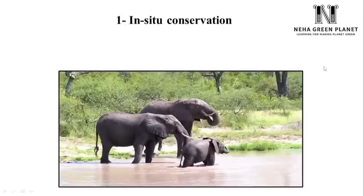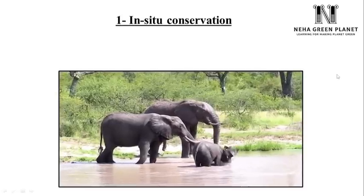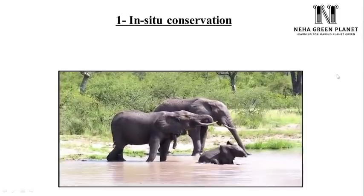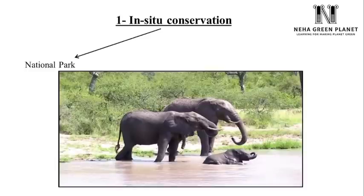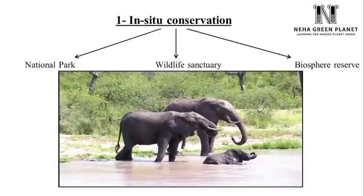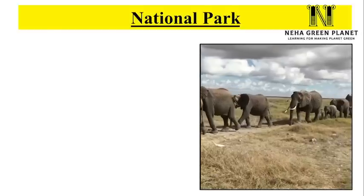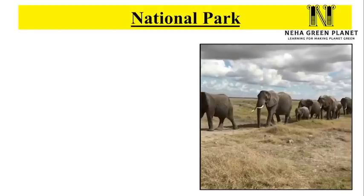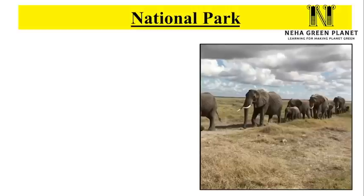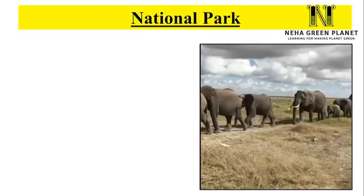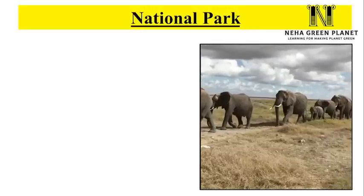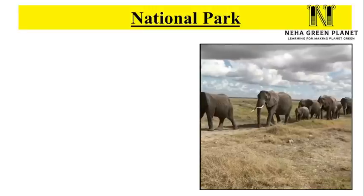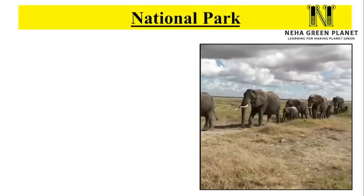First is in-situ conservation, which means protecting plants and animals in their natural space of living. It is of three types: first, national park; second, wildlife sanctuary; and third, biosphere reserve. National park is basically a space in which we protect animals in their natural living or natural habitat. National parks are created in order to protect entire ecosystems — for example, biotic components like elephants, and abiotic components like soil, sunlight, river, and water. So the entire ecosystem gets protected under a national park.